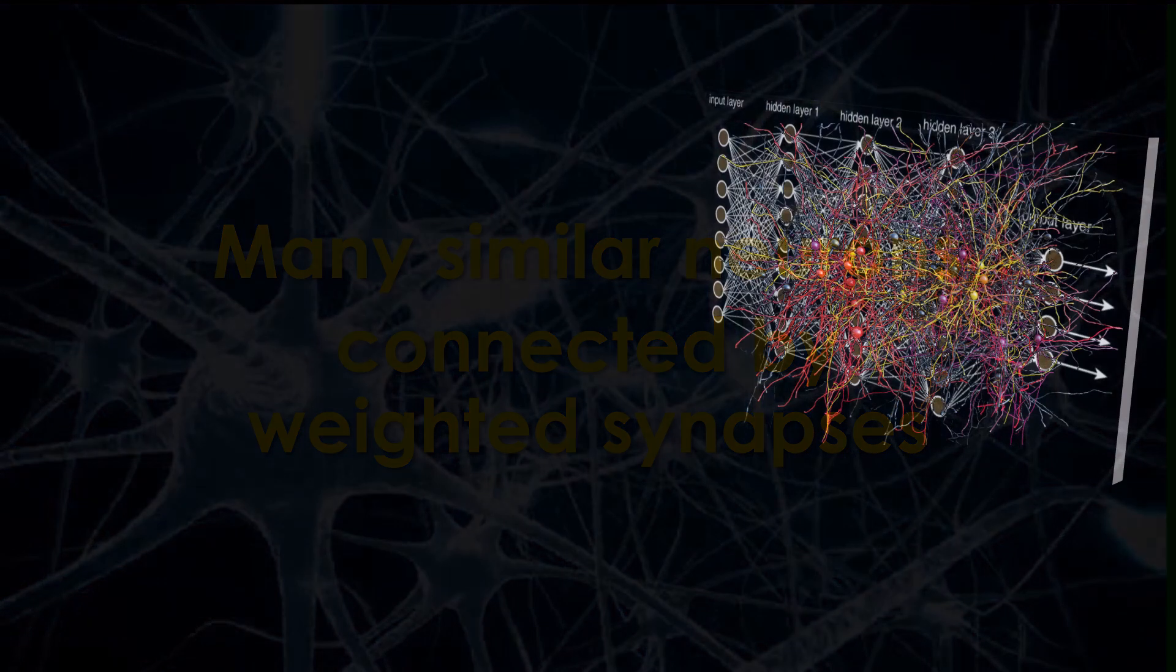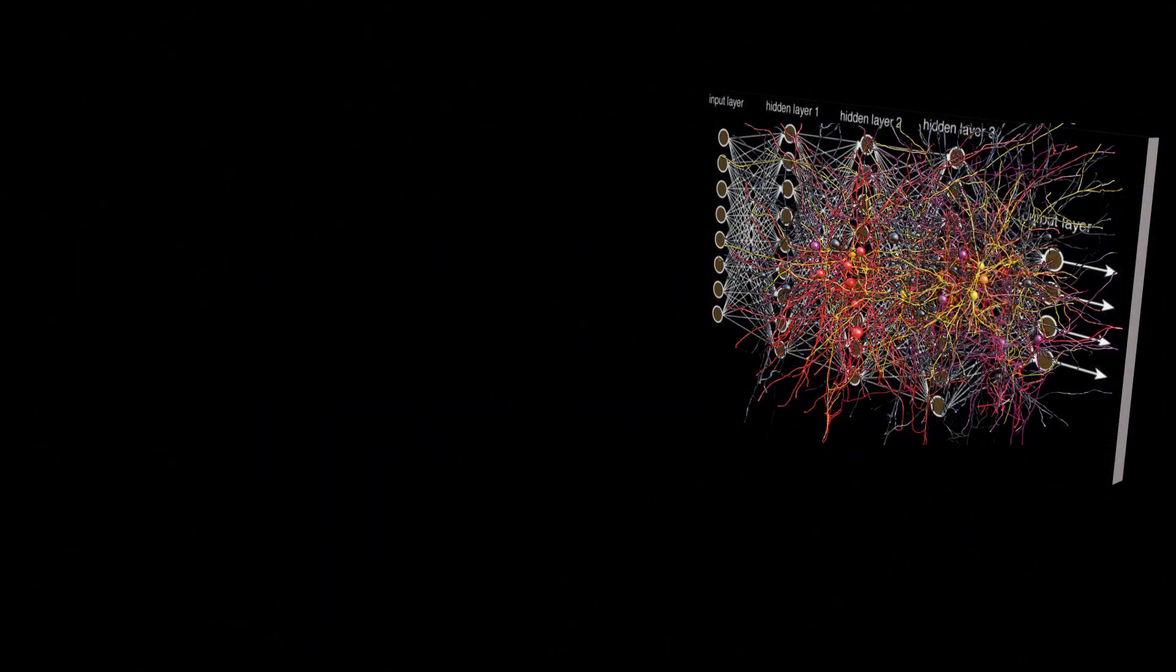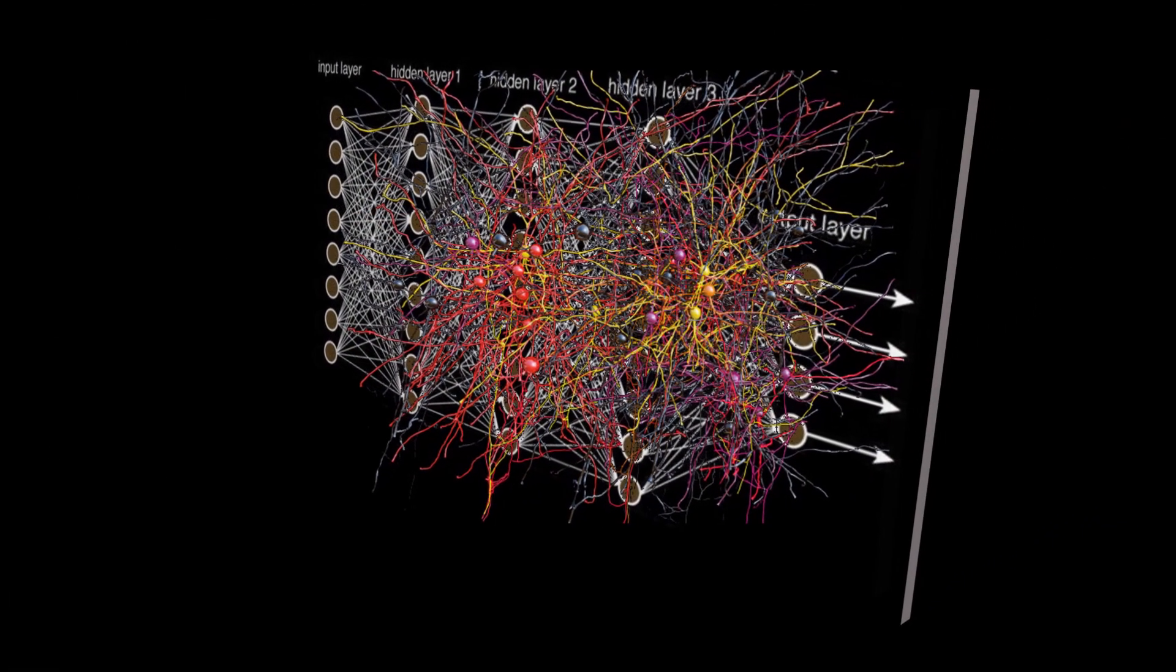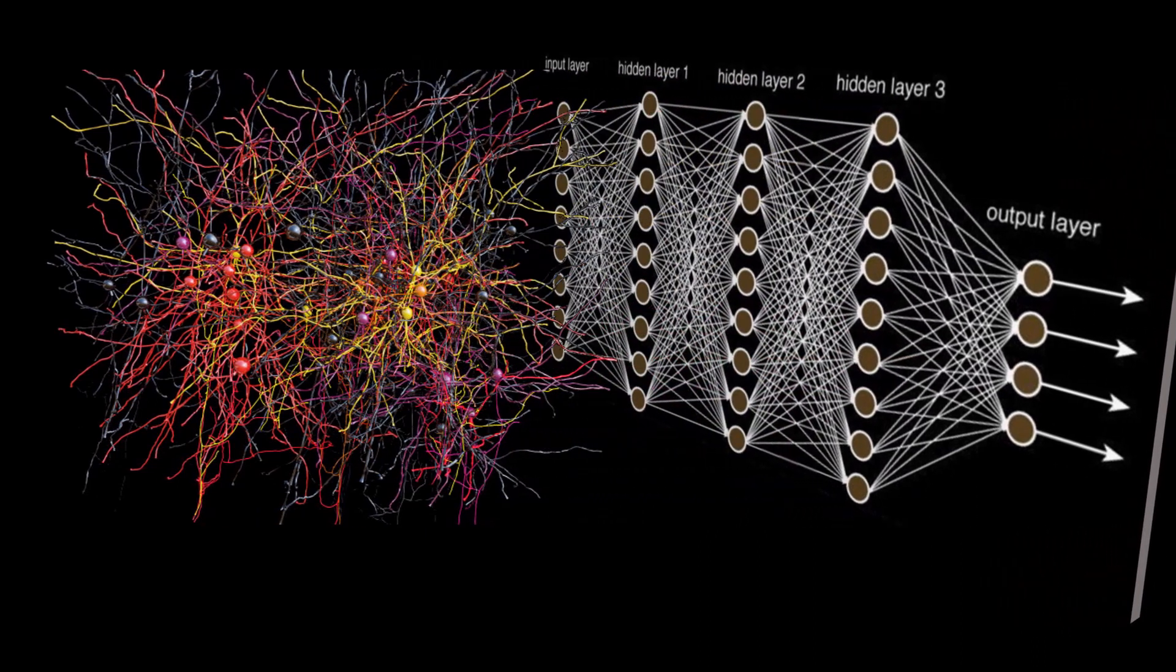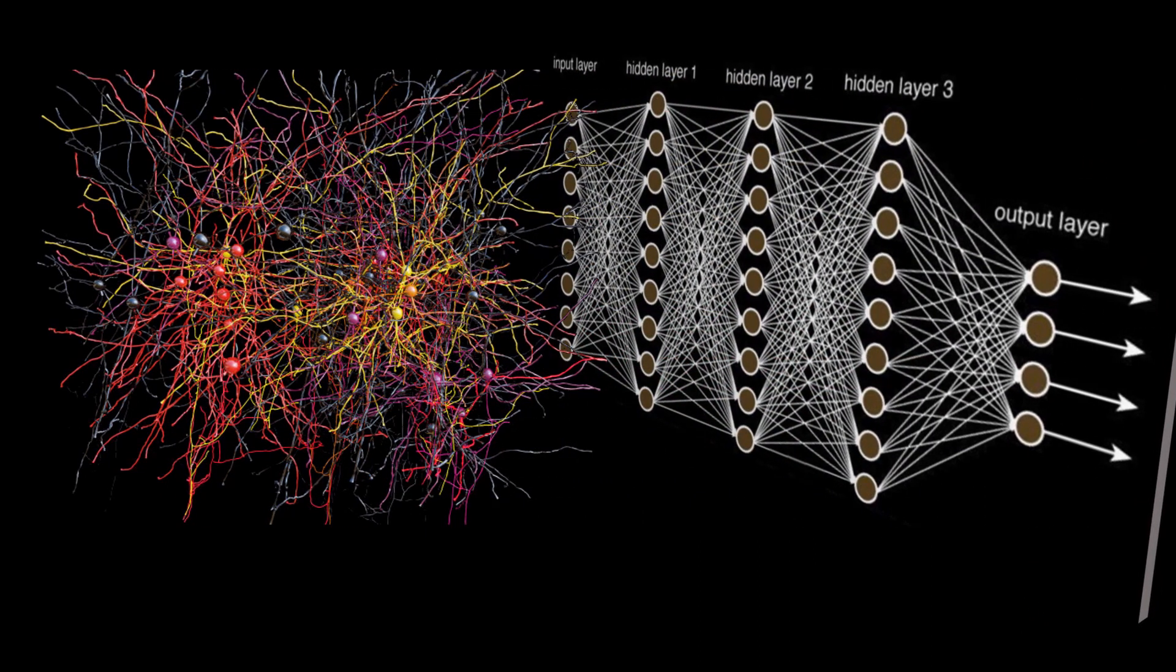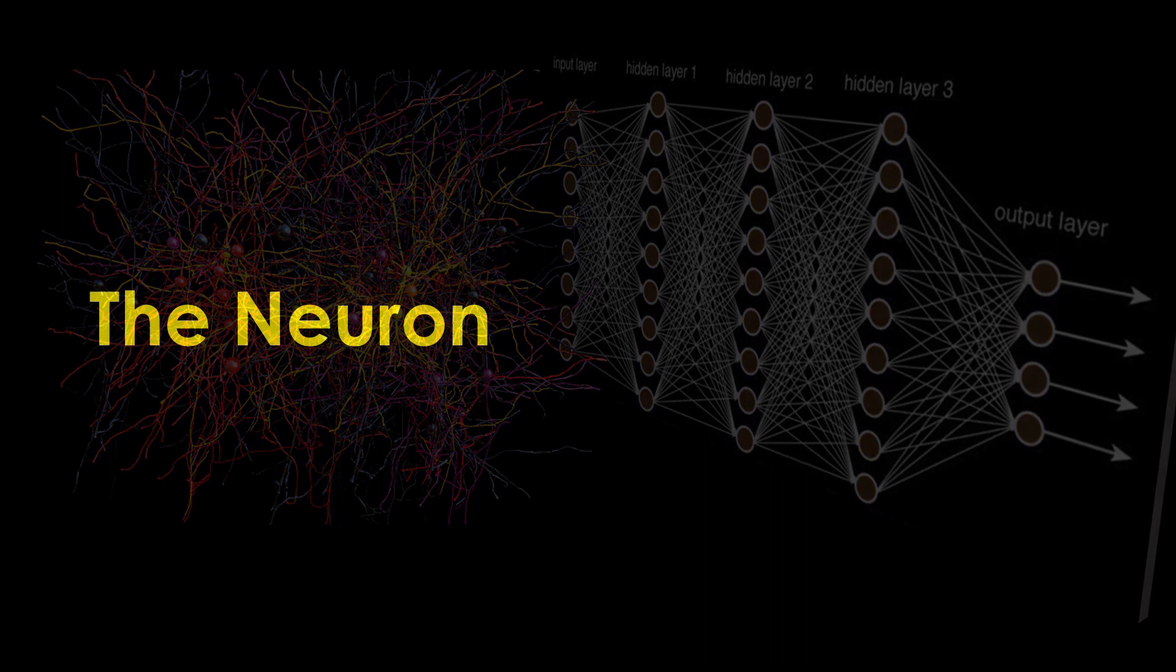Biological neurons don't appear in orderly layers with orderly connections between one layer and the next like in neural network diagrams. Instead, your brain has a tangle of interconnections which we have yet to unravel. So, let's start at the bottom with the biological neuron.